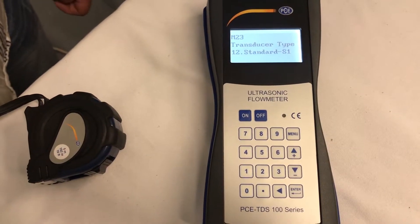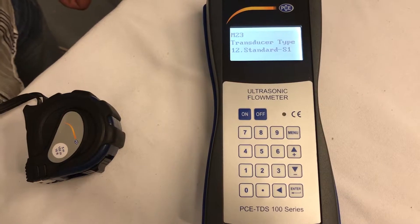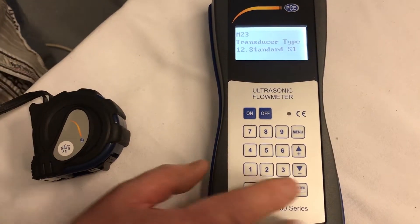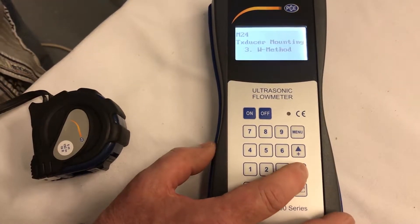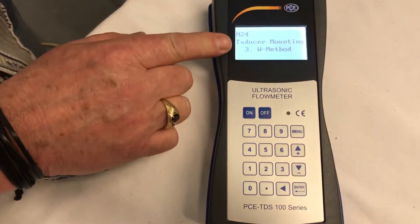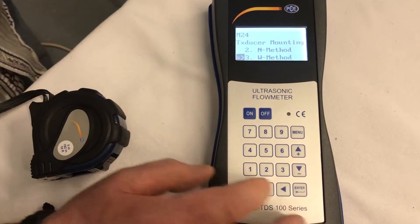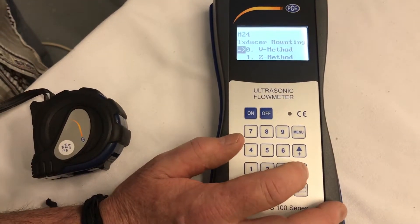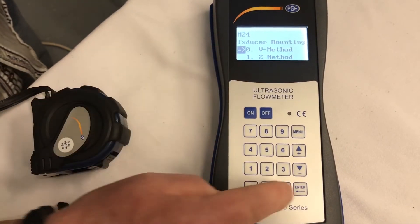Next, we're going to select the method, which is the V method for this particular pipe, which is M24. So we go down to M24, and we don't want the W, so we enter, and go down to V method. V method, select, enter.